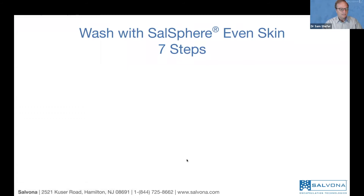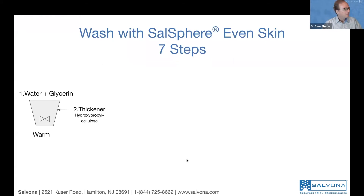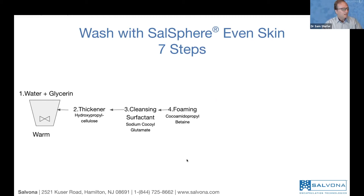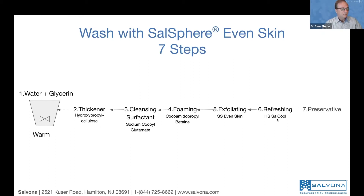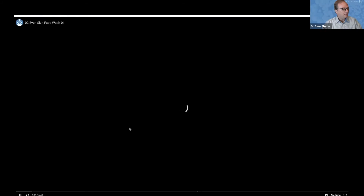The formula is menthol-free and alcohol-free. It contains about 60% water, glycerin, a polymer thickener, surfactants, two technologies — Hydro Sal Cool at 1% and Sal Sphere Even Skin at 3.3% — and a preservative at 1%. The process has seven steps: warm a single vessel, add water and glycerin, add hydroxypropyl cellulose as thickener, add sodium cocoyl glutamate as cleansing surfactant — all natural ingredients — then a foaming agent, then the exfoliating technology, then the sensory Hydro Sal Cool, and finally the preservative. It's mostly water in one vessel — just add ingredients one after another.